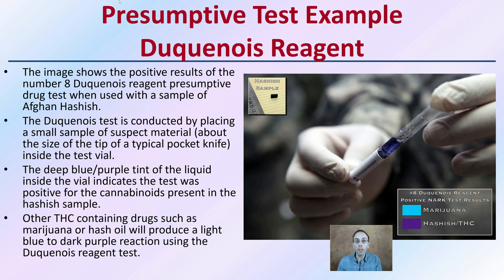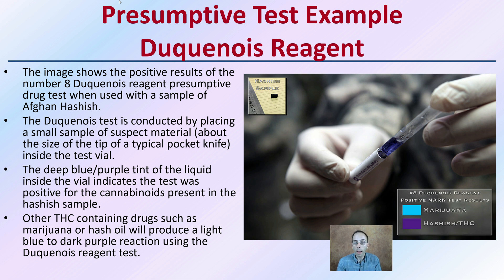Here we're looking at the presumptive test using the Ducanoid reagent, which would be testing samples of suspected marijuana or THC. The Ducanoid test is conducted by placing a small sample of the suspected material — about the size of the tip of a typical pocket knife — inside a test vial, as seen in the image above. The deep blue-purple tint of the liquid inside the vial indicates the test was positive for cannabinoids present in the sample. Other THC-containing drugs such as marijuana, hash oil, and others will produce a light blue to dark purple reaction using the Ducanoid reagent test. This is just one example of a presumptive test.